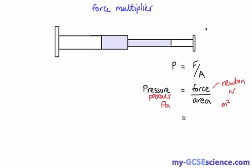So how do we use this as a force multiplier? Well, we need some numbers. Let's have a force of 20 newtons and an area of 0.1 meters squared. Let's give an area over this side of 0.4 meters squared, and let's see if we can work out what the new force is over this side.